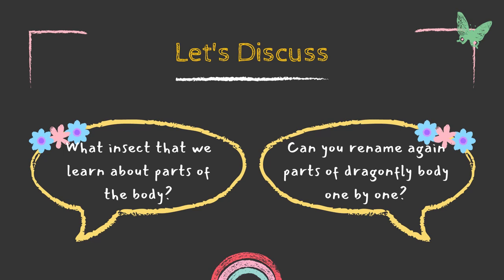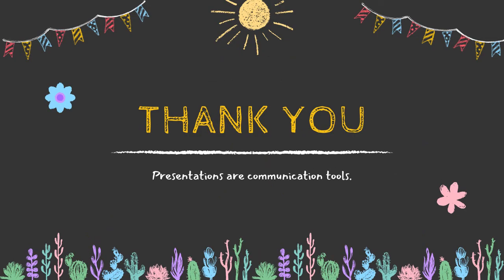Can you rename the parts of dragonfly body one by one? There are six parts. The first one is antenna. Number two, eye. Number three, head. Number four, thorax. Number five, abdomen. Last, wings. Congratulations kids, thank you. That's all for today. Bye.